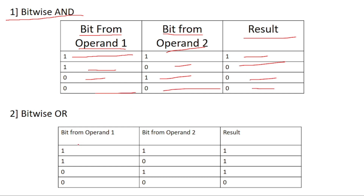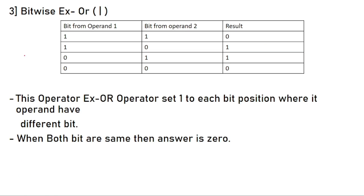For bitwise OR, the truth table: 1 OR 1 = 1. The OR truth table you already know — the results follow accordingly.